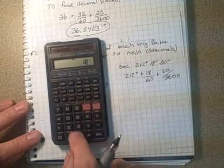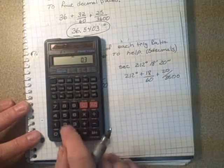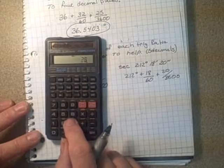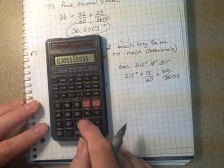Plus 20 divided by 3600. Gives you that value plus the 212.